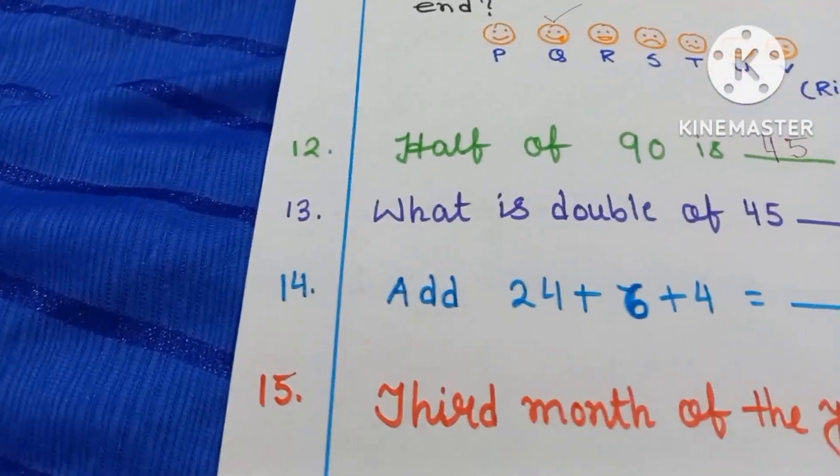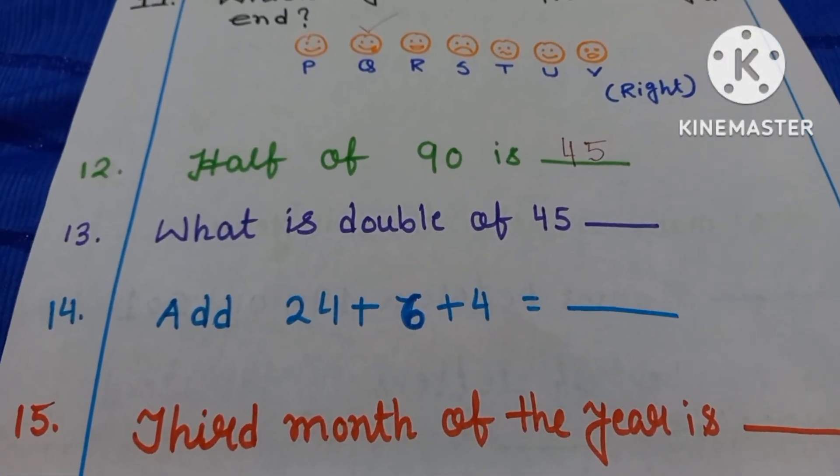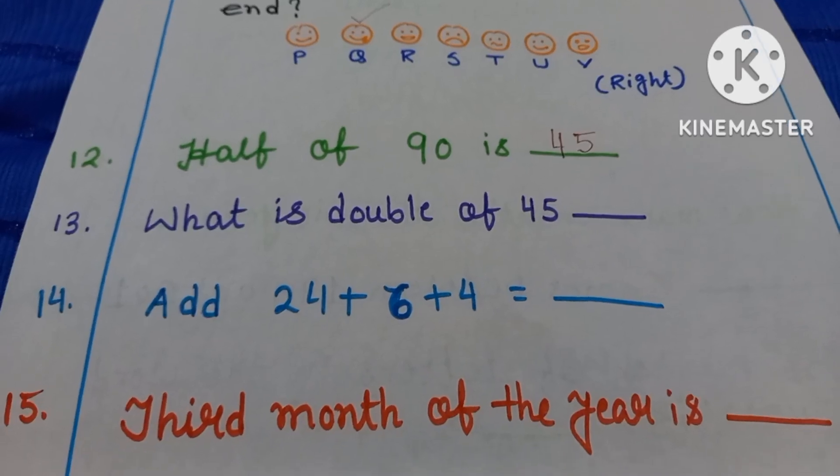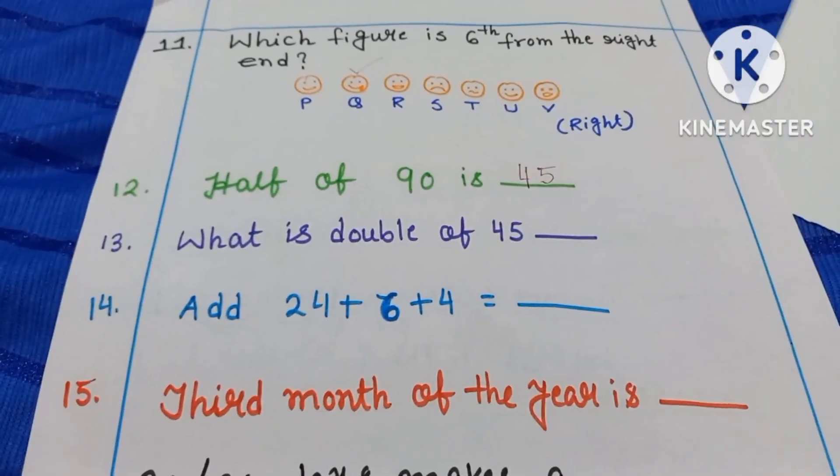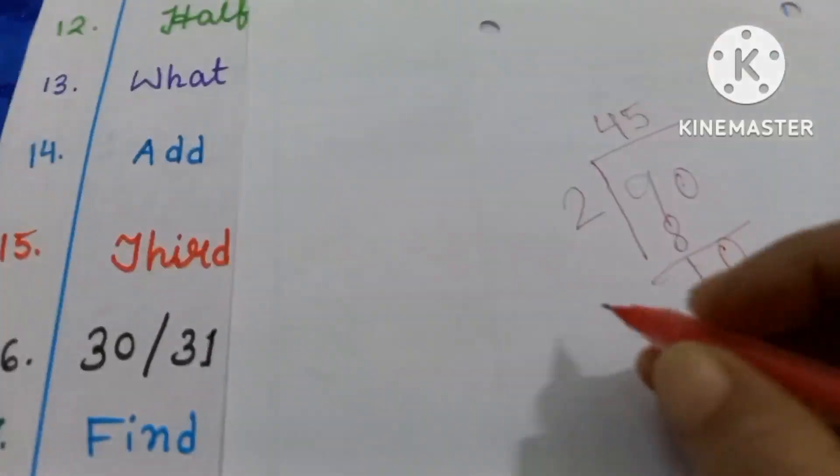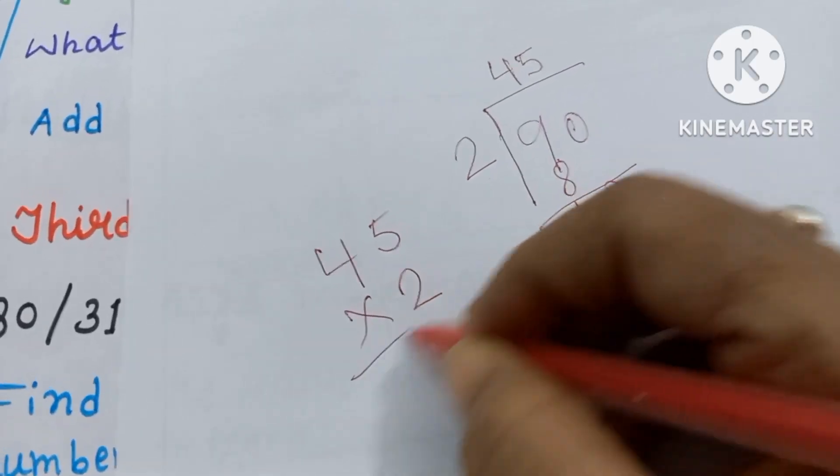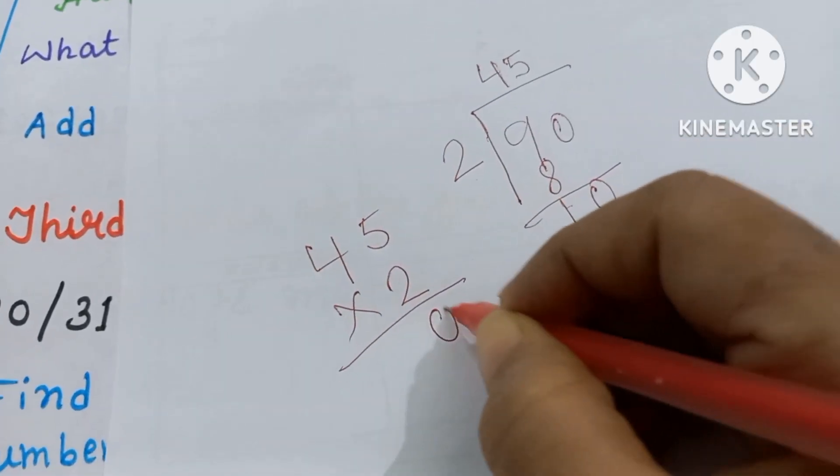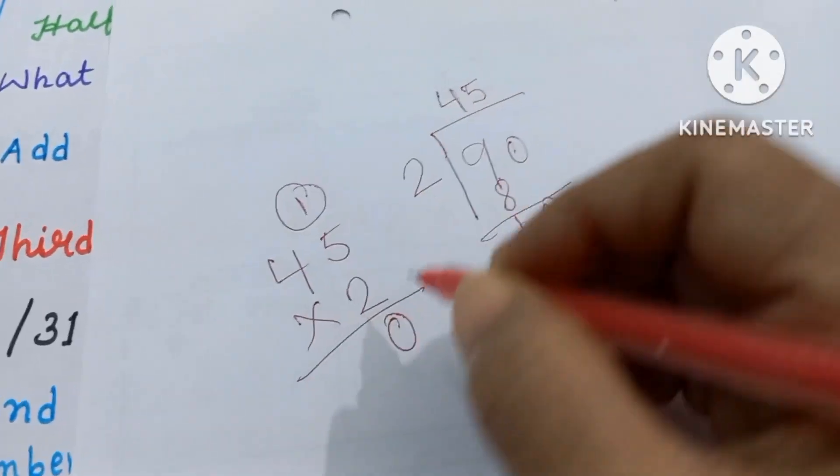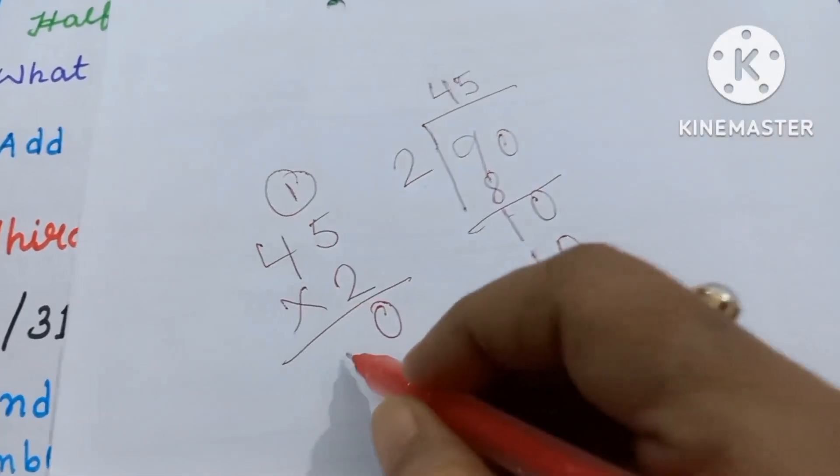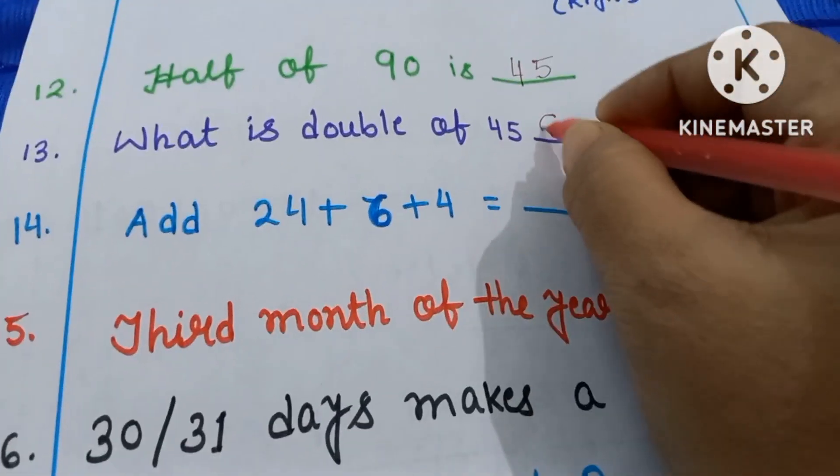Then question number 13. What is double of 45? So here you have to do multiply. With the help of this rough paper you can do 45 into 2. 5 2s are 10, 4 2s are 10 and 4 2s are 8 and 1, 9. 90. So here you have to write 90.